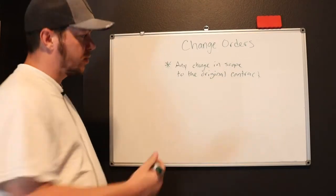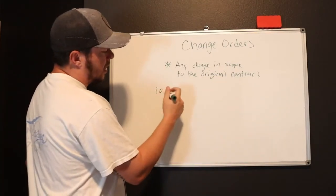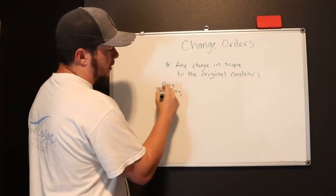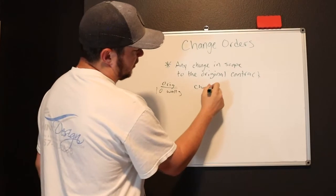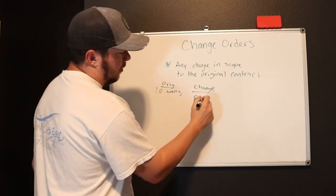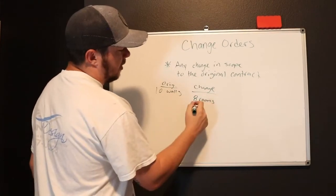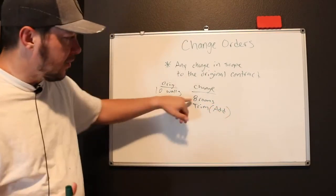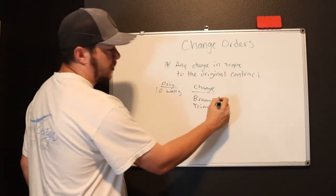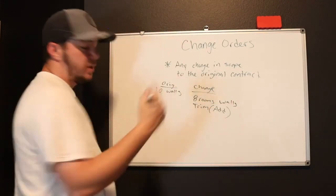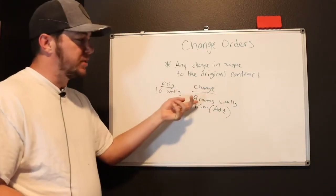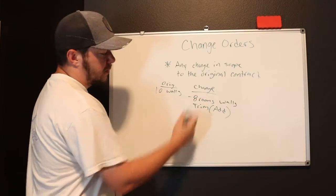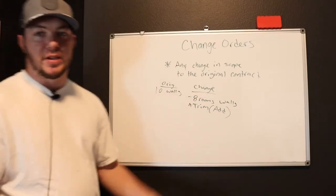So if the original contract says paint these 10 rooms, just walls, and the GC comes back and emails and says, look, we actually just need you to paint eight rooms and we need to add trim. So there's going to be a difference here in price—10 rooms versus eight rooms, walls. He comes back and says, well, actually we just need these eight rooms painted walls, but then we also need to add the trim in there. So you would basically deduct your cost for just walls for two rooms, and then you would add your cost for your trim, have the difference, and that would be your change order.